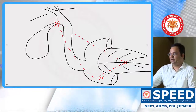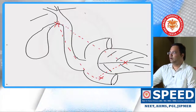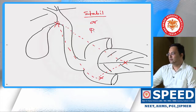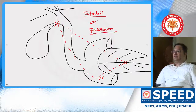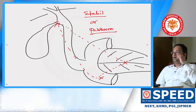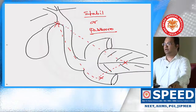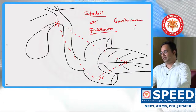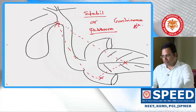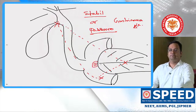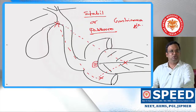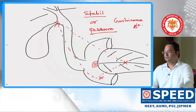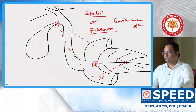This triangle is called the Triangle of Stabile, or Pasaro, otherwise known as the gastrinoma triangle. Within this triangle, gastrinoma is most commonly seen in the C loop of the duodenum, specifically within the submucosal aspect of the C loop of the duodenum.